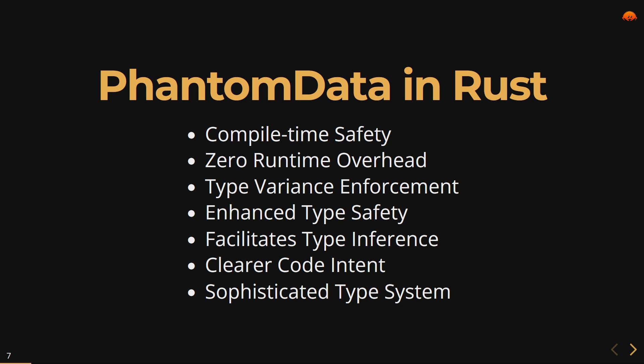PhantomData enables the enforcement of type variance, ensuring that generic code behaves correctly with respect to type relationships and constraints. By signaling ownership and lifetime relationships between different types within a data structure or generic context, PhantomData enhances type safety and reduces the likelihood of bugs related to type mismatches. PhantomData also guides the compiler's type inference process, helping it make more informed decisions about types and reducing the need for explicit type annotations in the code.